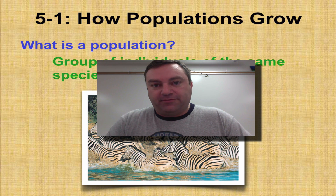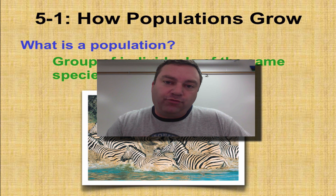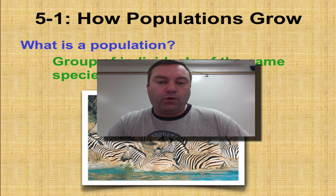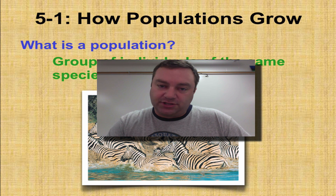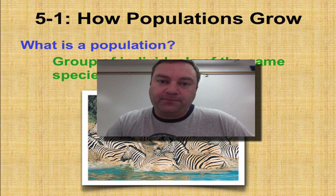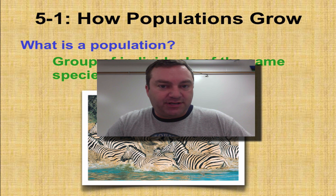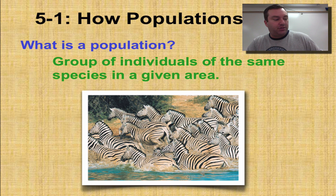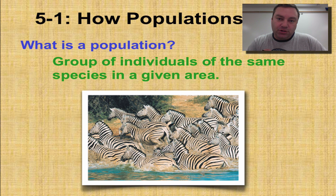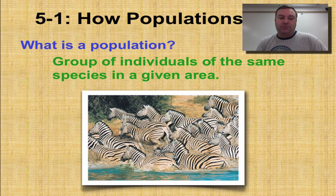Welcome to our first episode from Chapter 5. Chapter 5 is on populations — specifically what are the things in the environment that affect how populations grow. This is going to be one of the more difficult of our four ecology chapters, so make sure you really pay attention and do a good job writing down your notes. In this first episode we're going to look at the characteristics of populations. First we need a definition: a population is simply a group of individuals of the same species that live in the same area.